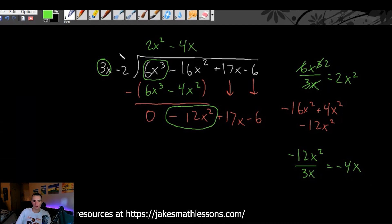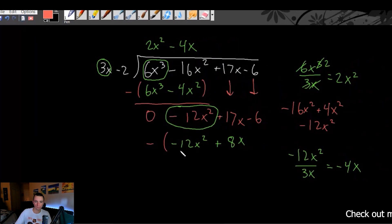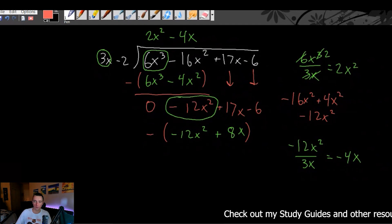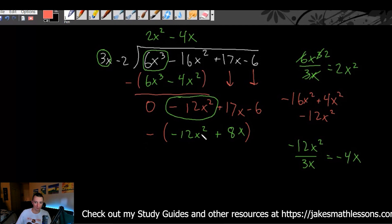Then you just do negative 4x times each of these terms here. So negative 4x times 3x is negative 12x squared. Negative 4x times negative 2 is positive 8x. And then one more time, we're going to do minus in parentheses, this whole thing from this whole polynomial here.